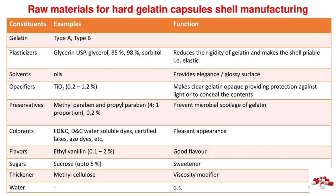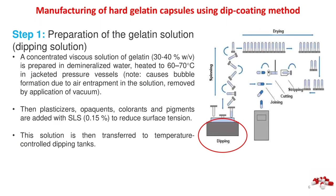Raw materials for hard gelatin capsule shell manufacturing: Gelatin (Type A, Type B); Plasticizers such as Glycerin USP, Glycerol 85%, 98%, Sorbitol — reduce rigidity of gelatin and make the shell pliable (elastic); Solvents/oils provide elegance/glossy surface; Opacifiers such as TiO2 (0.2–1.2%) make clear gelatin opaque, providing protection against light or concealing contents; Preservatives methylparaben and propylparaben (0.2%) prevent microbial spoilage.